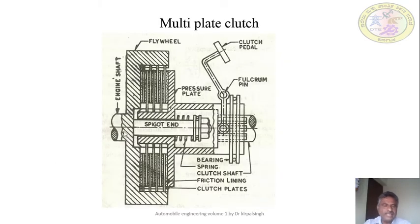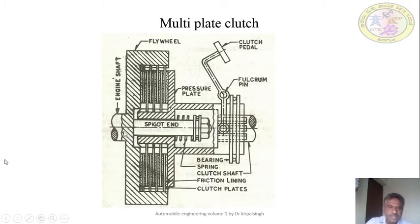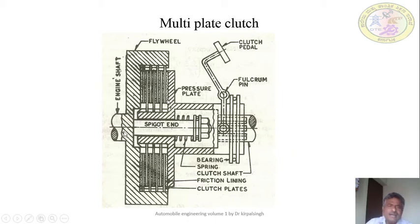Now the line diagram of a multi-plate clutch. The engine flywheel is bolted to the engine crankshaft. There is a pressure plate assembly with a number of pressure plates and friction plates. One set of plates will sit in the slots of the flywheel housing, whereas the other plates — the friction plates — will sit in the hub. The whole assembly is held against the flywheel surface with the help of a spring.